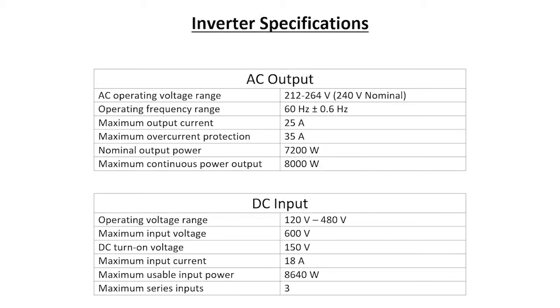We're going to use this example of an inverter that has a nominal output of 7200 watts and a maximum usable input of 8640 watts.